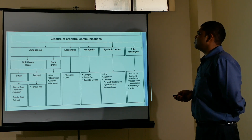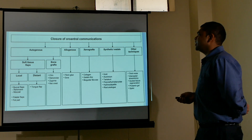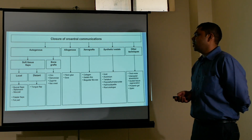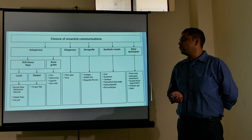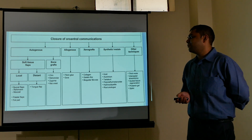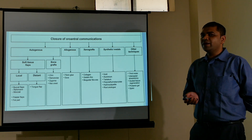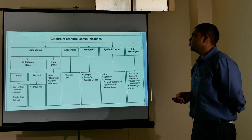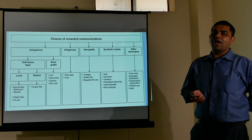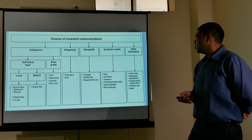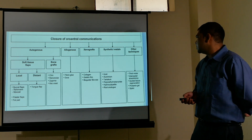There are five types of closure: autogenous, allogenous, xenograft, synthetic material, and other techniques. Autogenous may be soft tissue — local or distant flaps such as buccal, Rehrmann, mucosal, palatal, or free flaps — or hard tissue bone grafts from the chin, retromolar area, zygoma, or iliac bone. Allogenous options include fibrin glue and dura. Xenograft materials include collagen, gelatin films, and Bio-Gide or Bio-Oss. Synthetic materials include gold, aluminum, titanium, tantalum, polycarboxylate, and root analogs. Other techniques include third molar transplantation, alloplasties, guided tissue regeneration, and platelet gel.